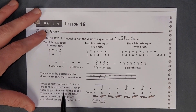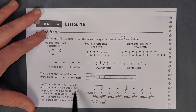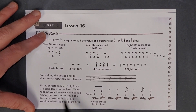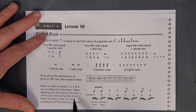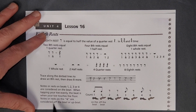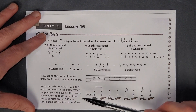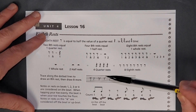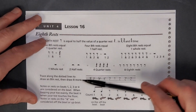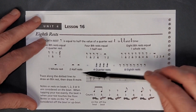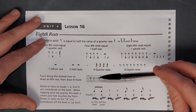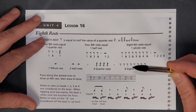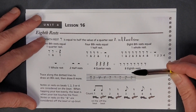Notes or rests on beats one, two, three, or four are considered on the beat. Tapping your toe evenly, the beat is when your toe touches the floor. Notes or rests on the 'and' are considered off the beat or upbeat. The downbeat is when the pencil goes down, and when it comes up, that's the upbeat.